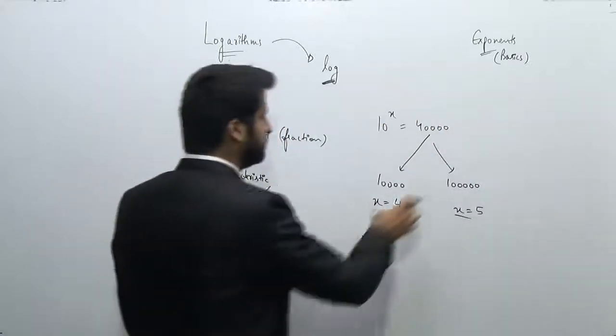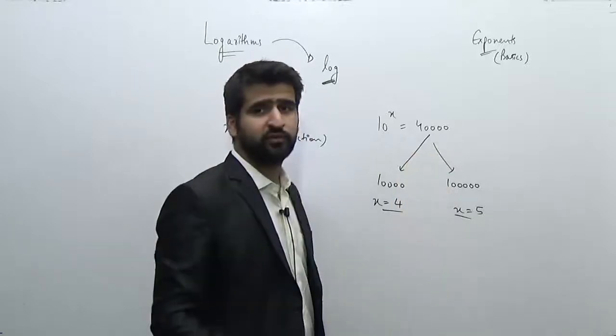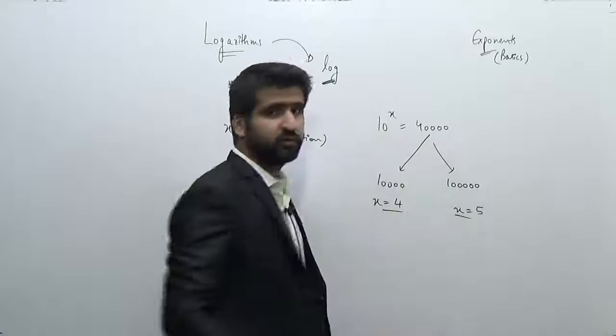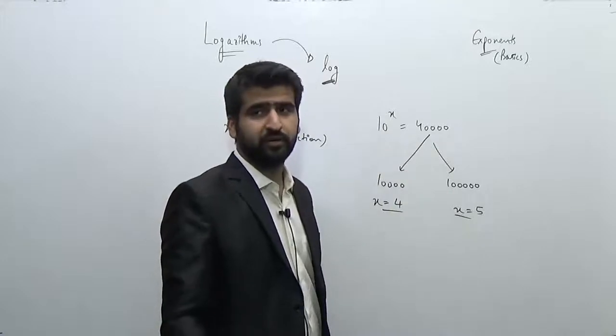So what have we learned till now? That if I want some random or unusual or some weird value of power of 10, let's say 10 to the power x is equal to 40,000, or 10 to the power x is equal to 300.